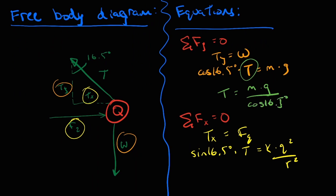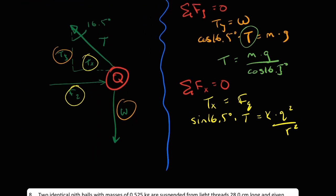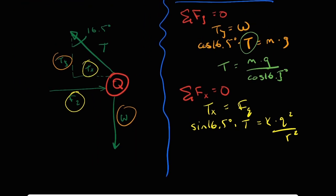Tension equals mass times g divided by cosine 16.5 degrees. From here we can substitute that into the horizontal equation. Let's do a little mental math here first. When we substitute the equation in, we will get sine 16.5 divided by cosine 16.5. So I'll just use a trig identity, and we can just write tan 16.5 times mass times g equals k multiplied by q squared over r squared.